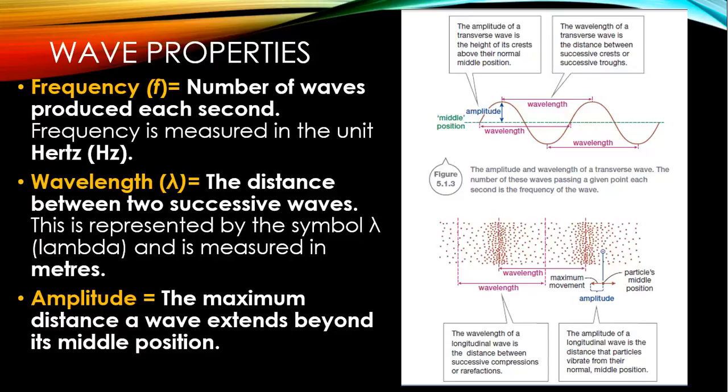Some properties you already know about are frequency, wavelength and amplitude. We represent frequency using the letter F, and wavelength using the symbol lambda. Frequency refers to the number of waves produced each second, measured in hertz. Wavelength is the distance between two successive waves, represented by lambda and measured in meters. Amplitude is the maximum distance a wave extends beyond its middle position. On the right we've got illustrations showing wavelength and amplitude for transverse and longitudinal waves.